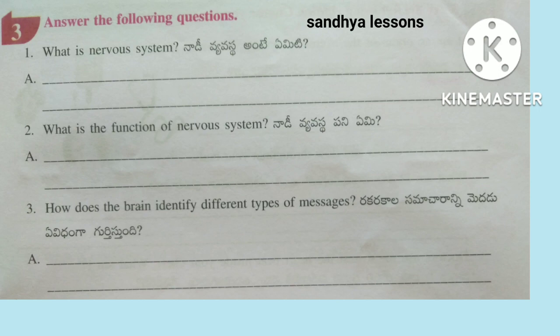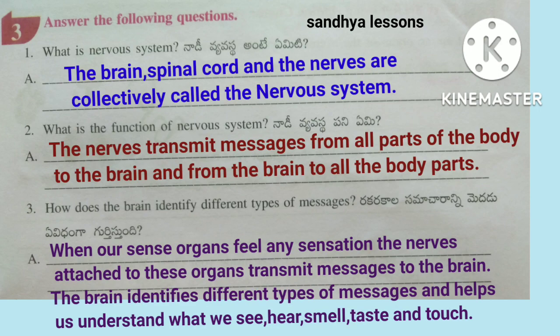Third, answer the following questions. First question: What is the nervous system? The brain, spinal cord, and the nerves are collectively called the nervous system. Second question: What is the function of the nervous system? The nerves transmit messages from all parts of the body to the brain, and from the brain to all body parts.